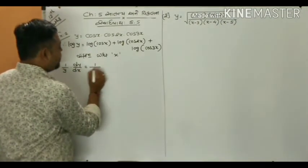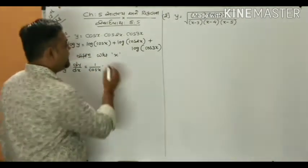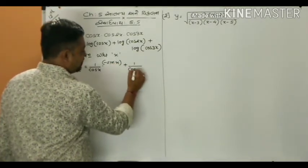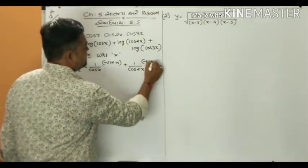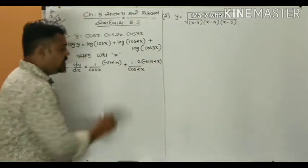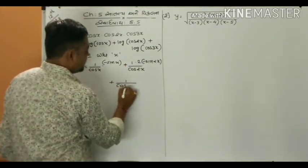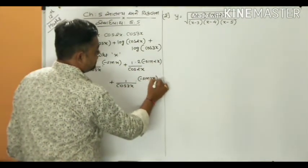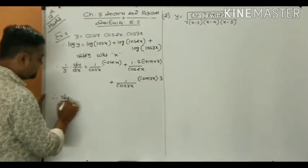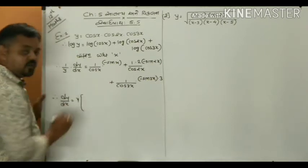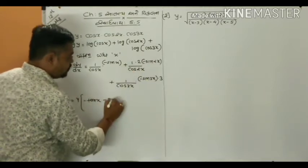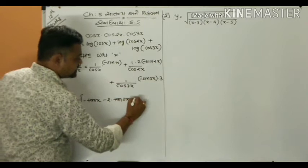Differentiating: (1/y) · dy/dx = (1/cos x)·(−sin x) + (1/cos 2x)·(−sin 2x)·2 + (1/cos 3x)·(−sin 3x)·3. This simplifies to: (1/y) · dy/dx = −sin x/cos x − 2·sin 2x/cos 2x − 3·sin 3x/cos 3x, which equals −tan x − 2·tan 2x − 3·tan 3x.